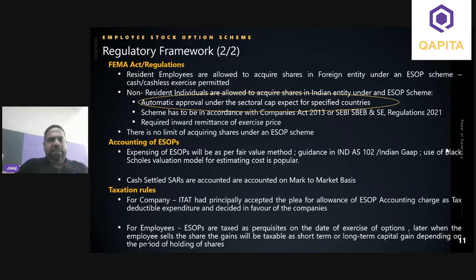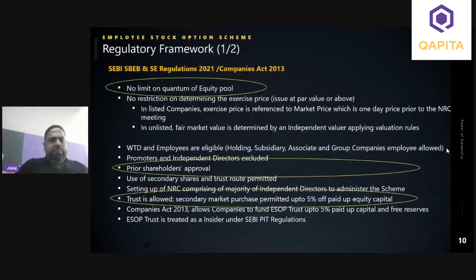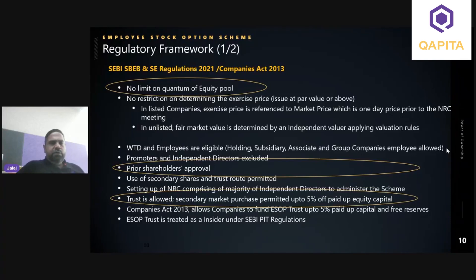For persons resident outside India, the FEMA approval is automatic as long as the limit is within the sectoral cap for the specified industry. Trusts are allowed to buy shares from the secondary market, but there is a limit of 5 percent of paid-up equity capital; there is no limit on direct primary issue. To summarize the regulatory process: approval flows from the board and NRC to shareholders for a special or ordinary resolution as the case may be, then the NRC or board allocates grants to individuals. No limit on primary pool quantum; limits are specified only for secondary purchases.